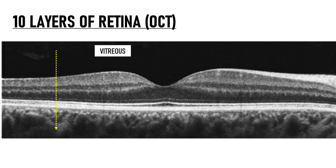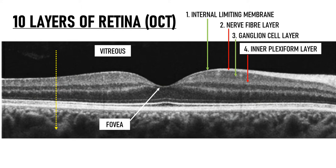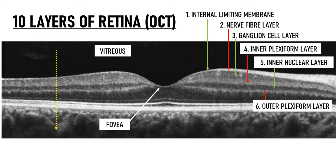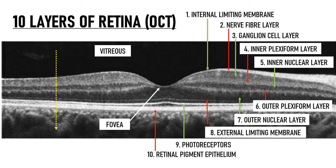This area represents the vitreous, and this depression that you can see in the center is the fovea. This is the internal limiting membrane. Below it is the nerve fiber layer. Then comes the ganglion cell layer followed by the inner plexiform layer. This hypo-reflective layer is the inner nuclear layer. Below it is the outer plexiform layer followed by the outer nuclear layer. Then comes the external limiting membrane, the IS/OS junction of the photoreceptors, and finally the retinal pigment epithelium, which is the outermost layer of the retina. And this is the choriocapillaris, which lies external to the retinal pigment epithelium.